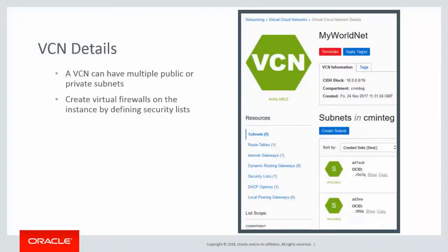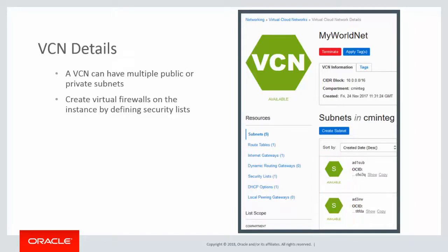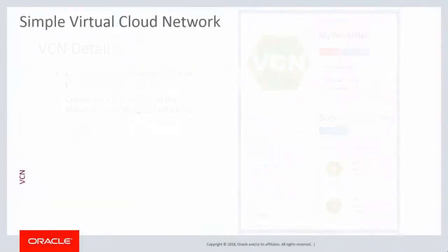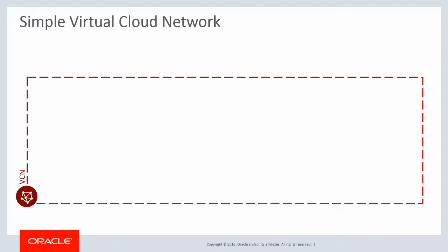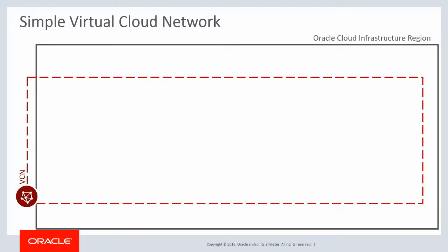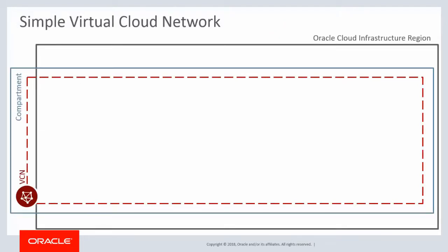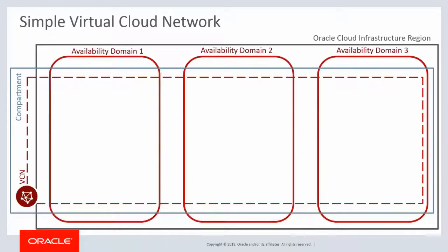A VCN can have multiple public or private subnets, which you can use for development, test, demo, and production environments. Create virtual firewalls on the instance by defining security lists that define allowed ingress and egress to an instance. This diagram shows a simple VCN. The VCN is set up in a region with a single compartment and three availability domains. Cloud Manager is installed on a VM instance in Availability Domain 1 and resides in a public subnet.